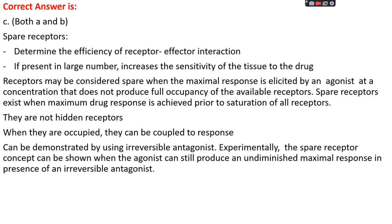Spare receptors determine the efficiency of receptor-effector interactions, and if present in large numbers, increase tissue sensitivity to drugs. Spare receptors are those considered spare when maximal response is elicited by an agonist at a concentration that does not produce full receptor occupancy. No spare receptors exist when maximal drug response is achieved prior to saturation of all receptors. They are not hidden receptors, and when occupied they can be coupled to a response. The spare receptor concept can be demonstrated experimentally using an irreversible antagonist.